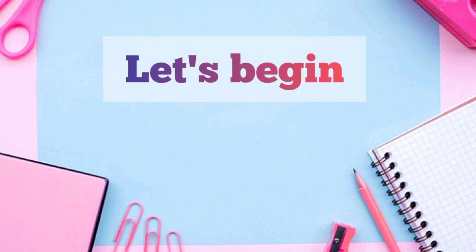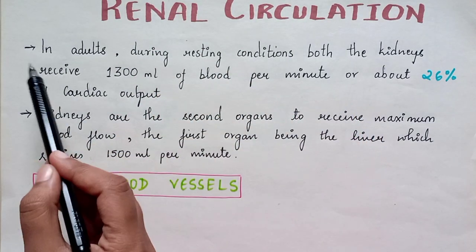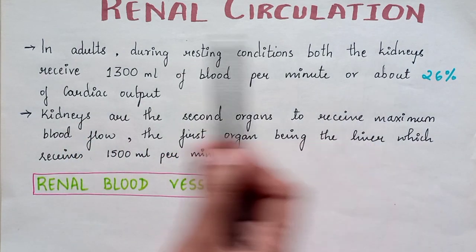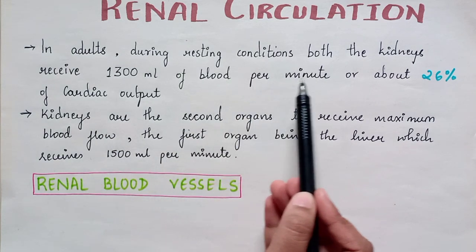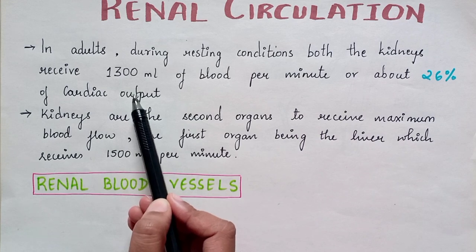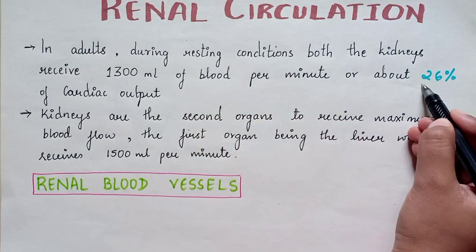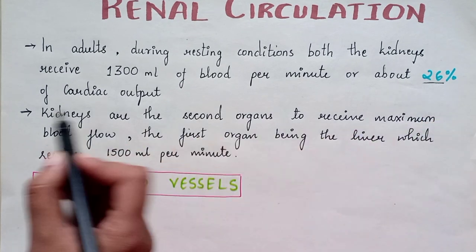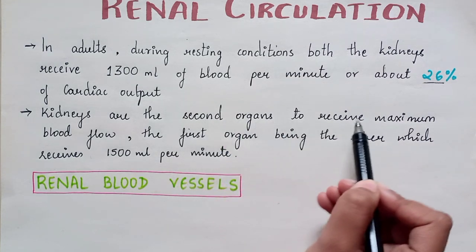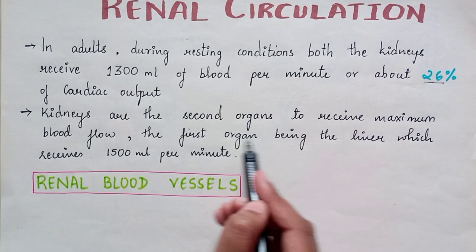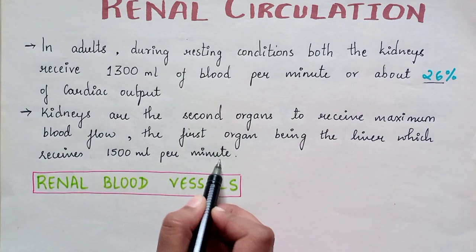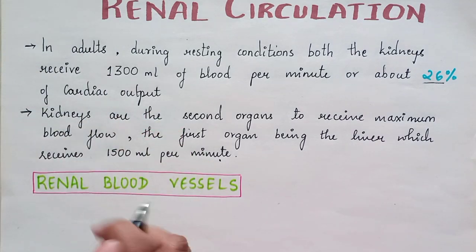Without much ado, let's begin. Renal Circulation. In adults, during resting conditions, both the kidneys receive around 1300 ml of blood per minute, or about 26% of cardiac output. Our kidney almost gets about 26% of the cardiac output, which is the second highest. Kidneys are the second organs to receive maximum blood flow, the first organ being the liver which receives 1500 ml per minute.